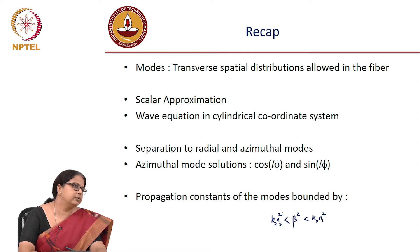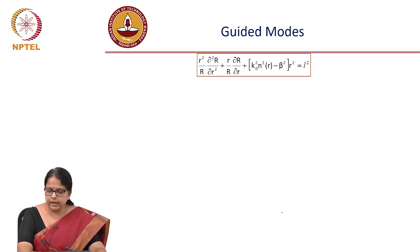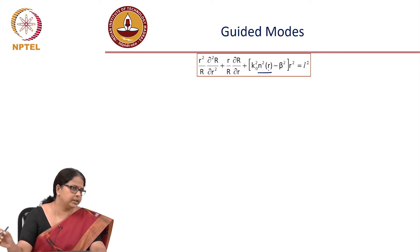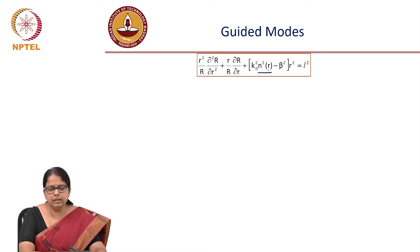What was left was solution to the radial part. For the guided modes, we said that in the radial equation you actually had n as a function of r, which means that in a step index fiber, you can clearly write two separate equations, one in the core and one in the cladding.